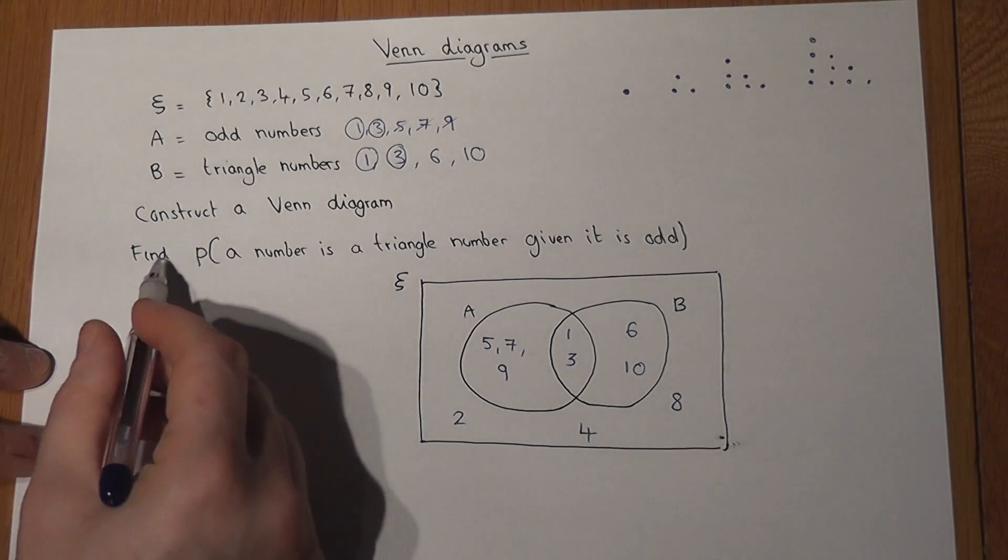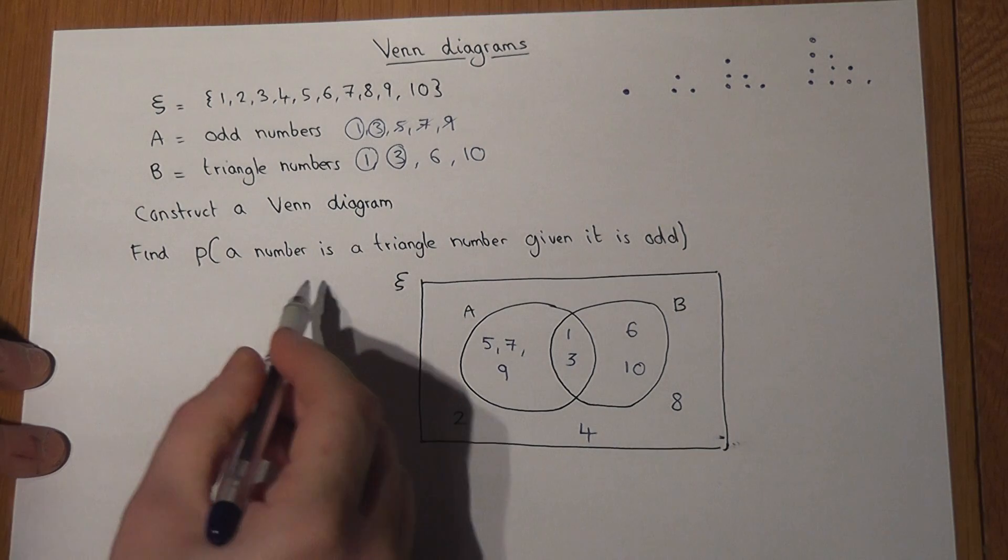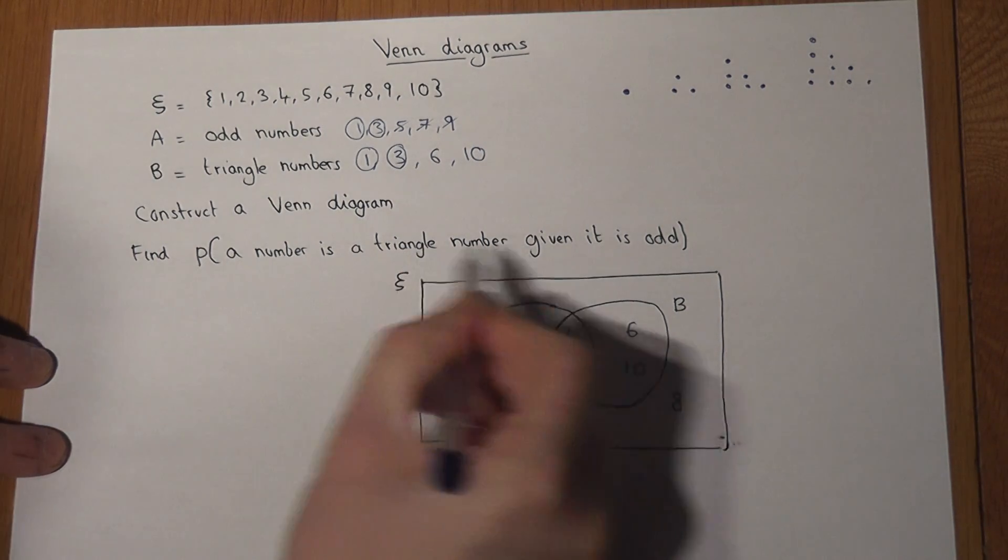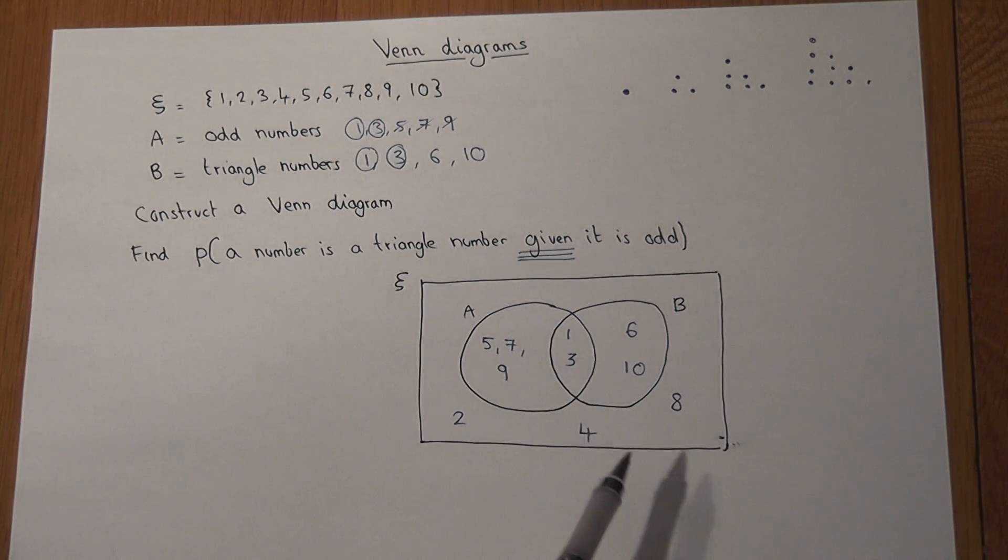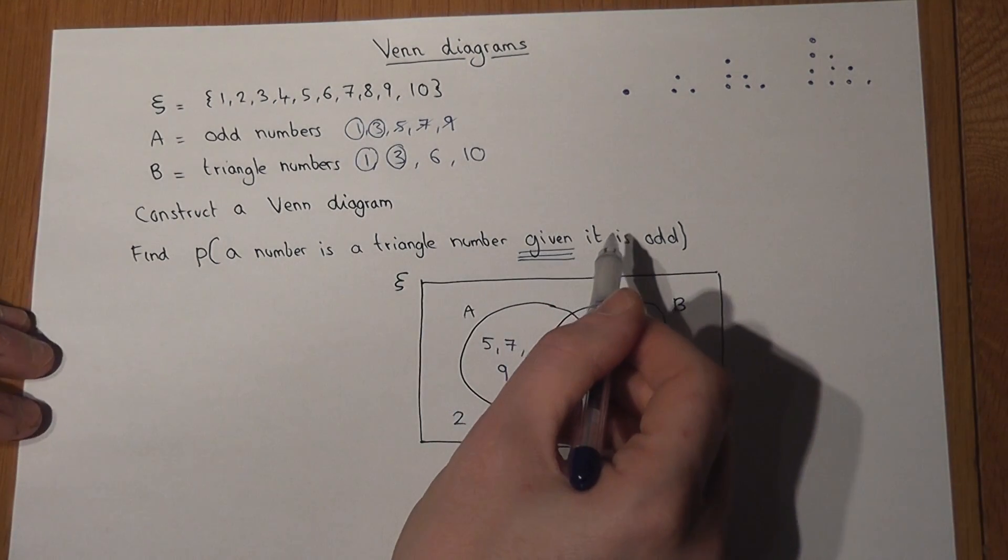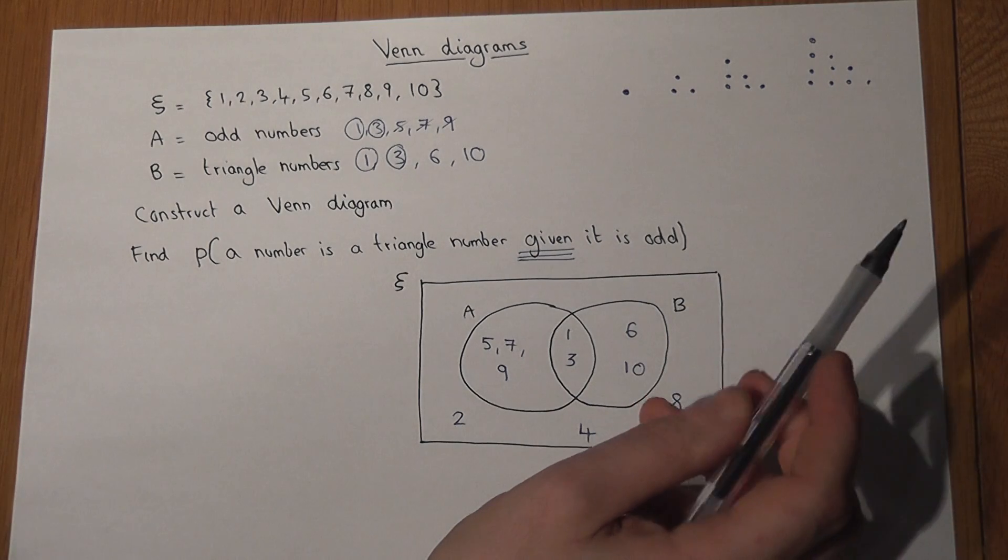And my question says, find the chance that a number picked at random is a triangle number given it is odd. Now the word given in this context means a really specific thing.